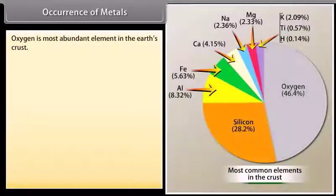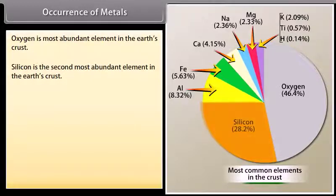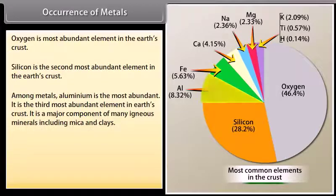Occurrence of metals. Oxygen is most abundant element in the earth's crust. Silicon is the second most abundant element in the earth's crust. Among metals, aluminium is the most abundant. It is the third most abundant element in earth's crust. It is a major component of many igneous minerals including mica and clay. Many gemstones are impure forms of Al2O3 and the impurities range from chromium to copper.